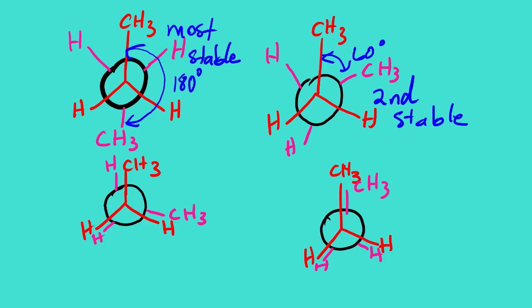As the carbons come closer and closer, the energy increases and the stability becomes less. This one under eclipsed will be the third. Then this one, since the angle is zero, will become the least stable.